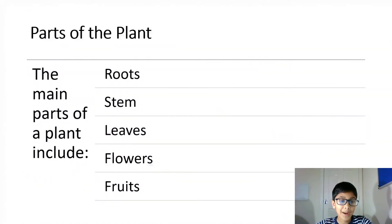Parts of the plant. The main parts of a plant include roots, stem, leaves, flowers and fruit.